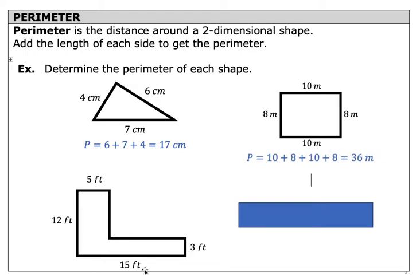For this next irregular shape, we could start off with 5 feet, but this is an unknown length. So think for a moment, how can you determine this length? This total length is 12 and this component is 3.